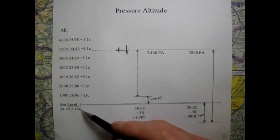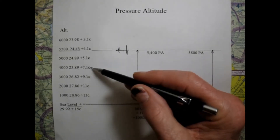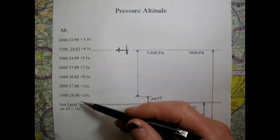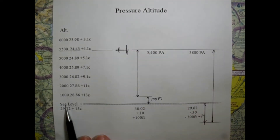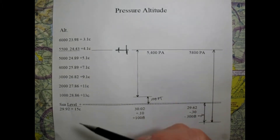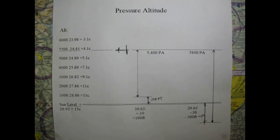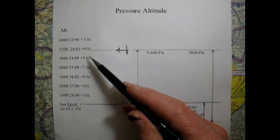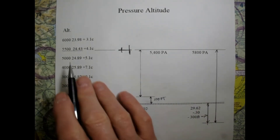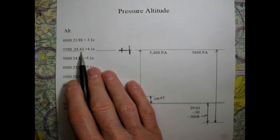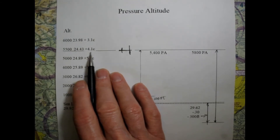As we go up in altitude, our pressure drops - it's almost 1 inch for every 1,000 feet. At 1,000 feet our pressure is 28.86; at 2,000 feet, 27.86. We also lose 2 degrees C for every 1,000 feet. So at 5,500 feet on a standard pressure day, we'll have a pressure of 24.43 at plus 4.1 degrees C.